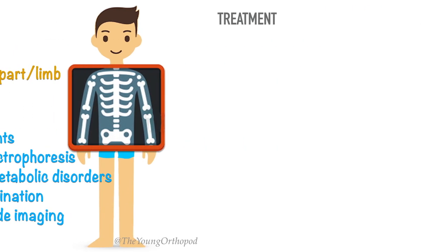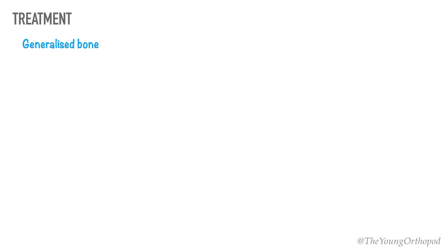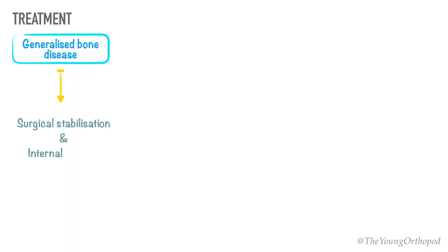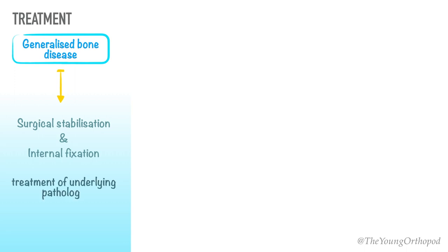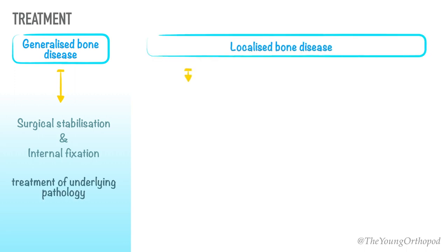Treatment usually depends on the underlying pathology. A pathological fracture occurring in the setting of a generalized bone disease is usually treated with surgical stabilization and internal fixation. A pathological fracture in a generalized disease usually heals in time.